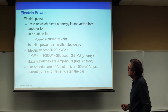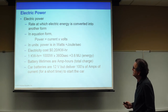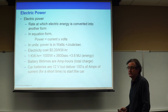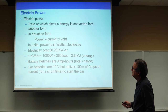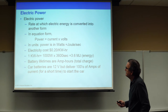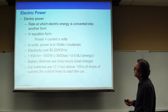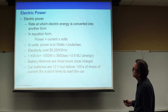It's easy to see this if you expand out what each of these terms means. The voltage is the energy gained by electrons per unit charge, which for an electron is 10 to the minus 19 coulombs, and the current is equal to the number of charges per second. So if I multiply the number of charges per second by the energy gained per charge, I get the energy consumed per second.